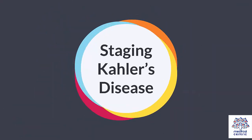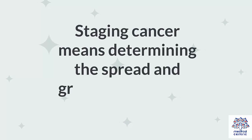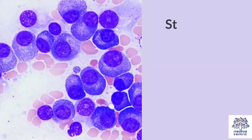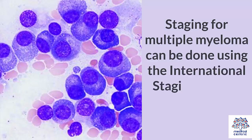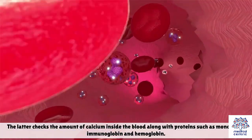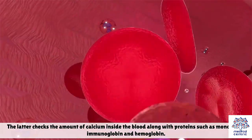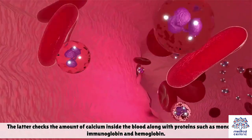Staging Kahler's disease: Staging cancer means determining the spread and growth of cancer in the human body. Staging for multiple myeloma can be done using the International Staging System, or ISS, or the Durie-Salmon system.